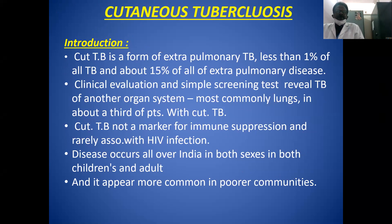Cutaneous TB accounts for less than 1% of all TB and about 15% of all extra pulmonary tuberculosis. Extra pulmonary forms include cutaneous TB, lymph node TB, bone and joint TB, and others. Clinical evaluation and simple screening tests often reveal TB in another organ system, most commonly the lungs.